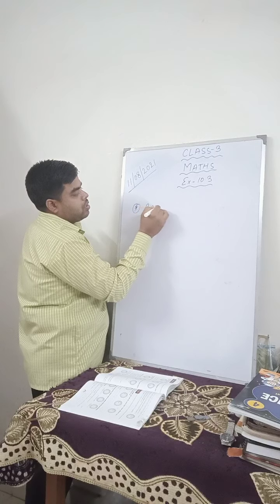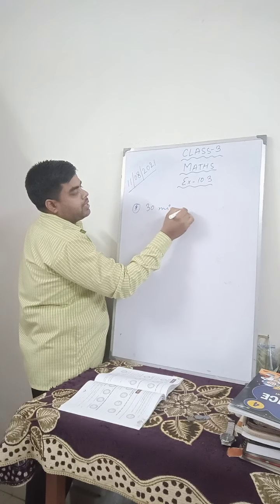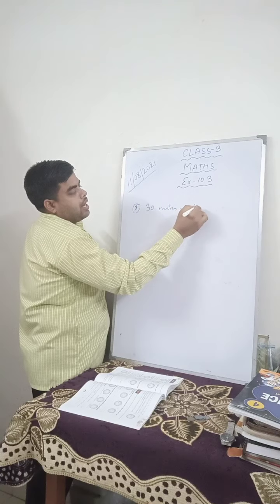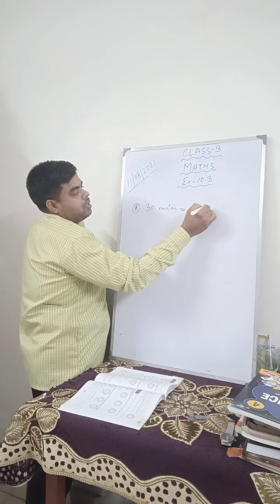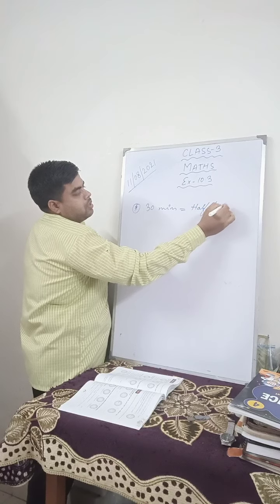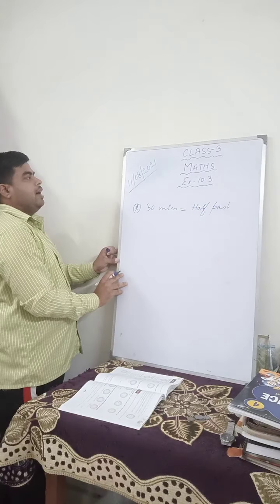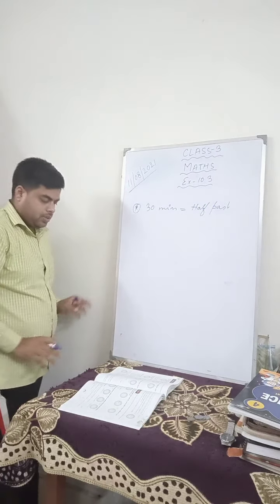30 minutes is equal to what we can write — 30 minutes is equal to half past. We can always write half past.